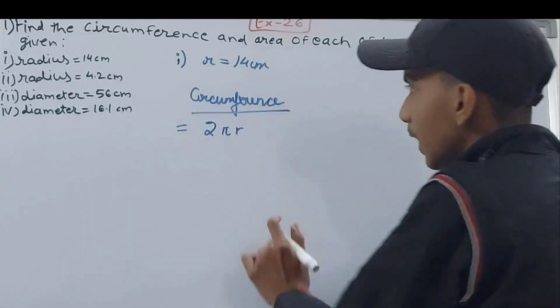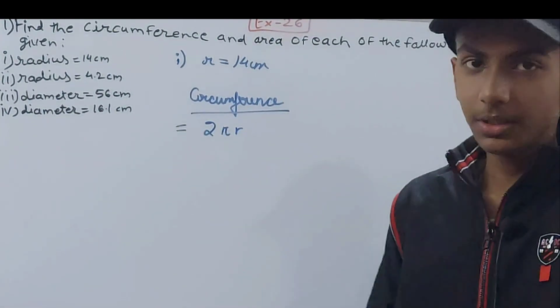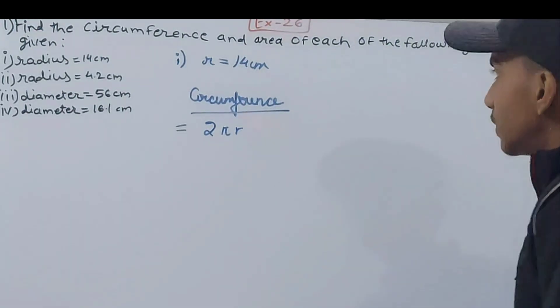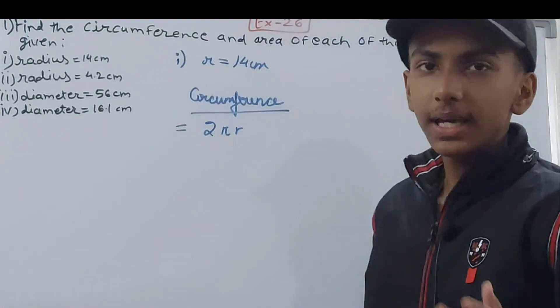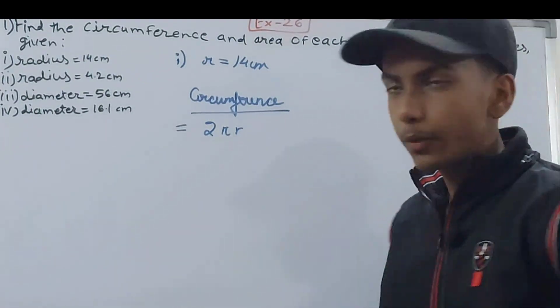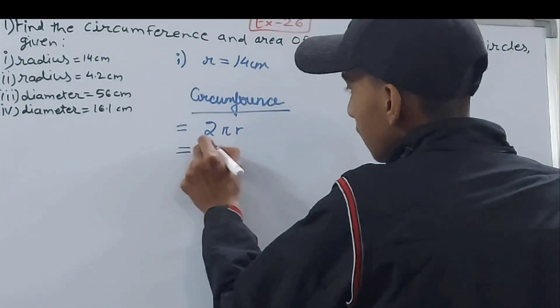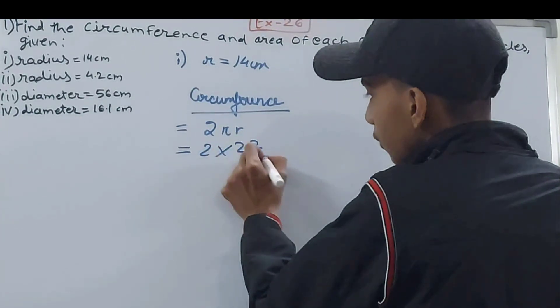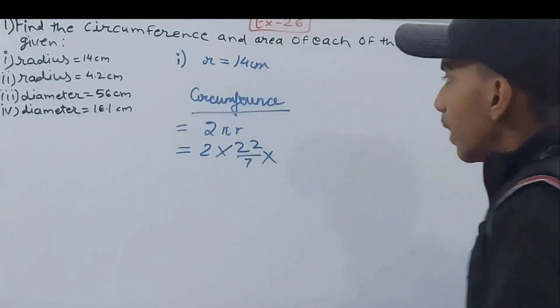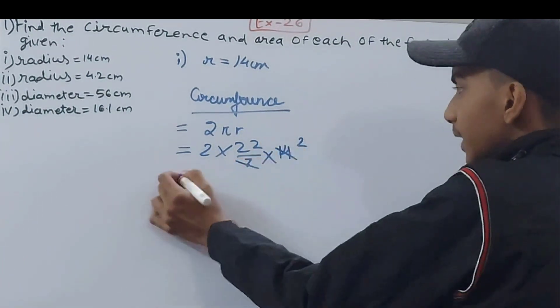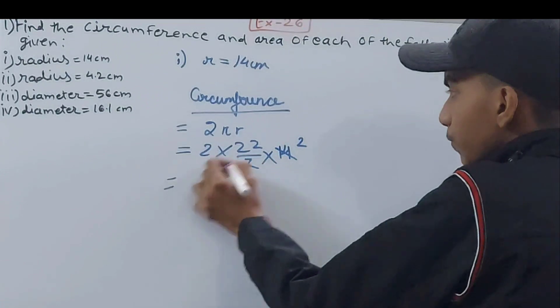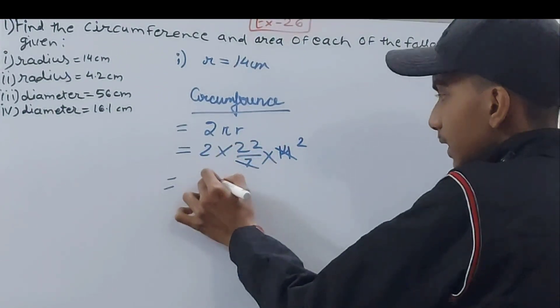When we have the diameter then there is another formula, we will come to that. Here my radius is 14 centimeters and the value of π is 22/7 or 3.14. I will take 22/7, so 2 × 22/7 × 14. 14 and 7 will cancel each other, 2 × 2 = 4 × 22 = 88 centimeters.